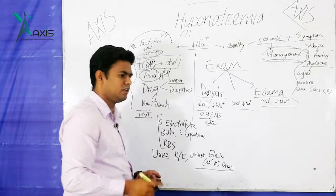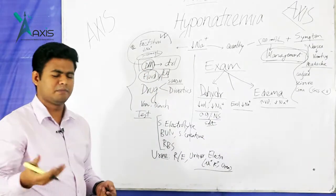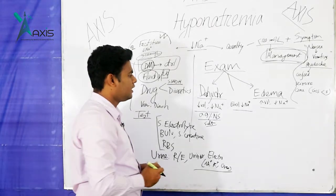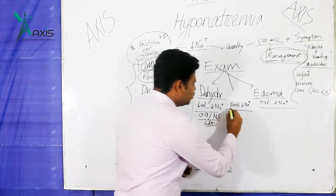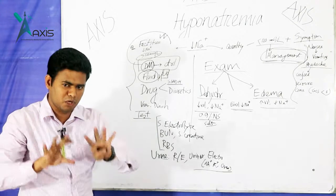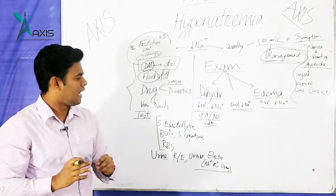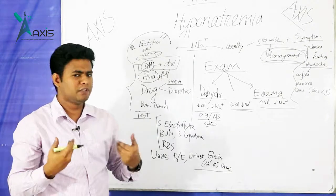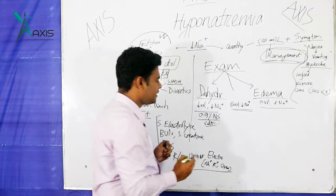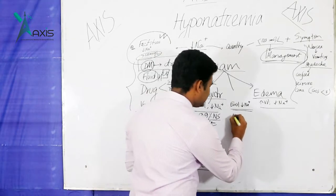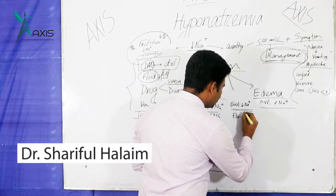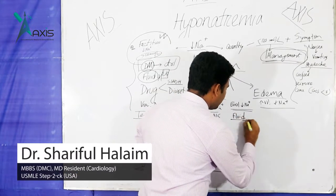For sodium chloride tablets, give three times a day. In euvolemic hyponatremia, the body volume is normal, so we don't need extra volume. We simply do fluid restriction — sit the patient down and reduce the amount of fluid they are taking.